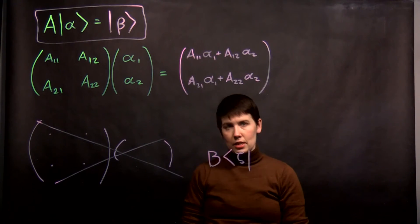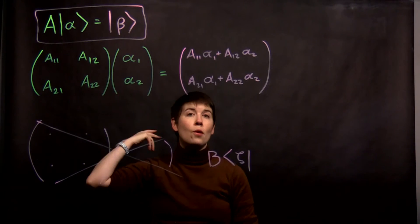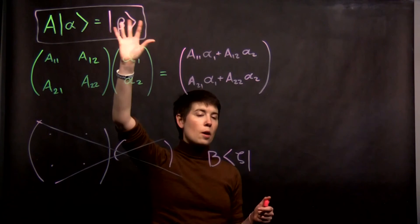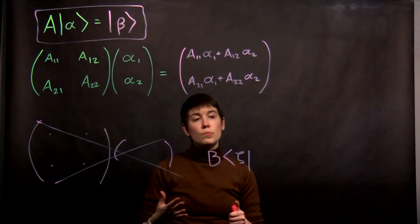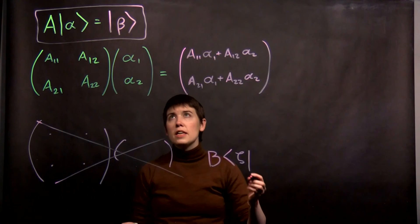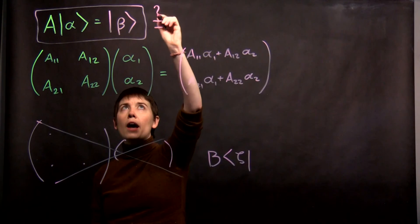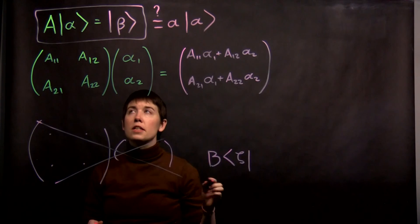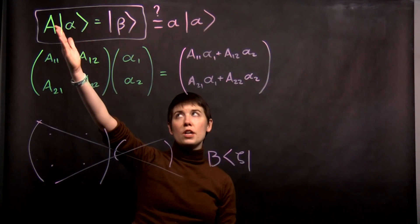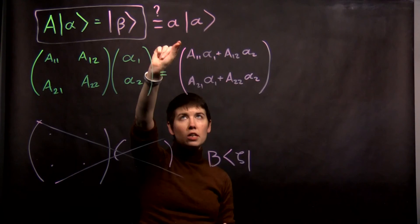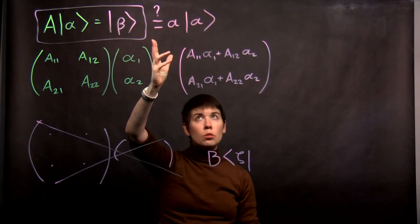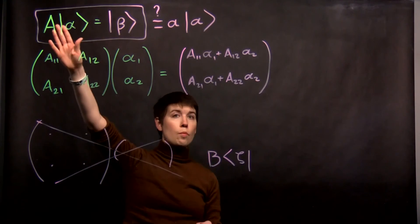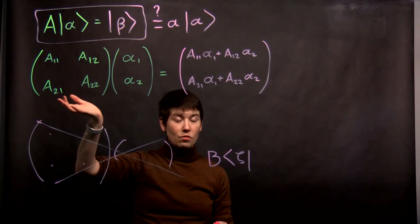Where this gets interesting is when our operators actually represent certain measurements and when this represents certain spin states. We can ask what this state ends up being for a given measurement and a given spin state. A special case is when applying the operator to the ket gives a scalar coefficient times the original ket state — this is the idea of eigenvalues and eigenvectors of the operator, which in linear algebra are just eigenvalues and eigenvectors of a matrix.